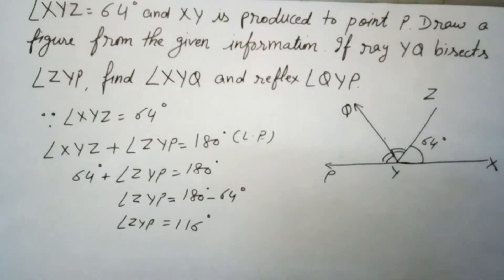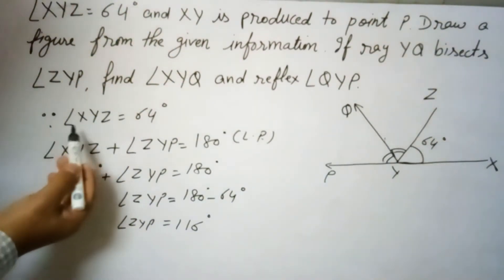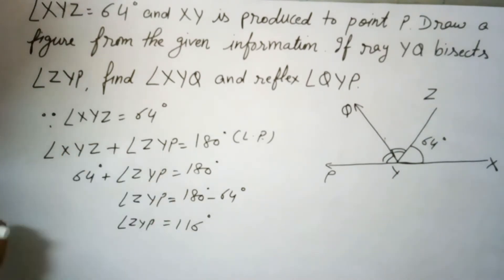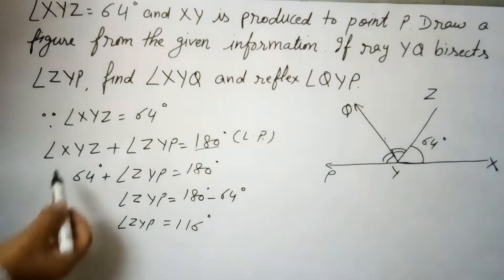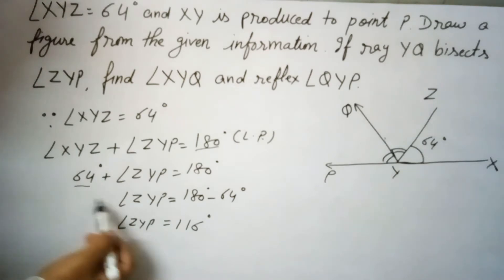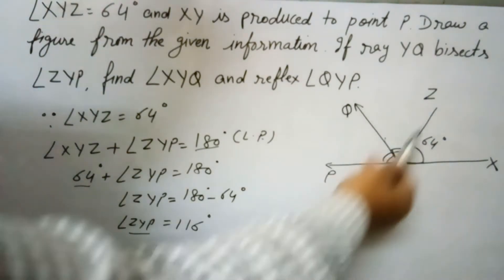Now here angle XYZ is 64 degrees. So angle XYZ and angle ZYP, they are forming a linear pair, so their sum is 180 degrees. This angle is 64, so from there we find angle ZYP is equal to 116 degrees.